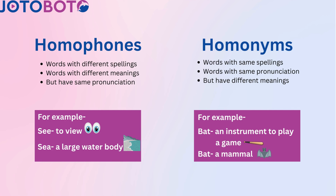On the other hand, homonyms are words which have the same spelling, but different meanings, and have the same pronunciation. For example, 'bat' (B-A-T): bat is an instrument to play a game, and bat also means a mammal.